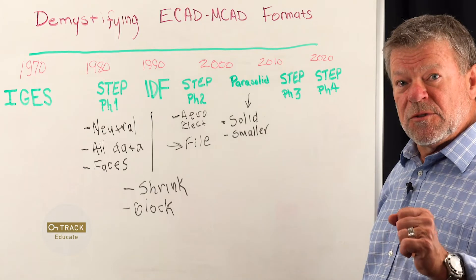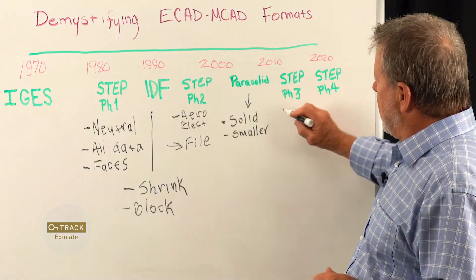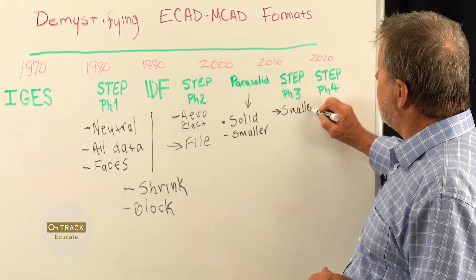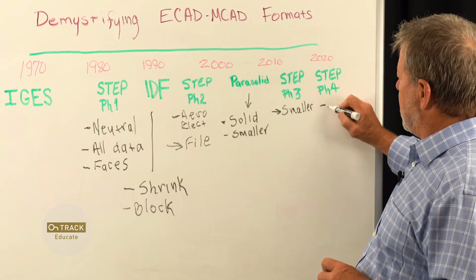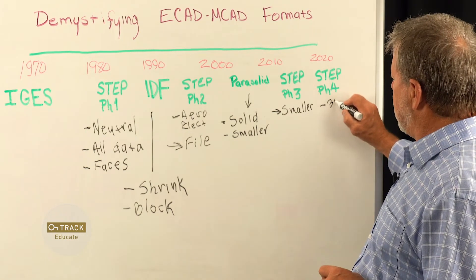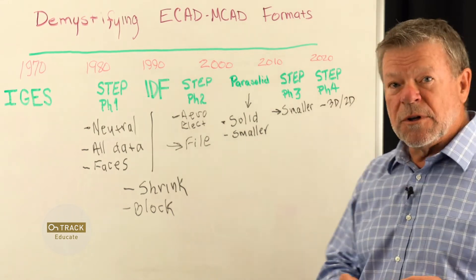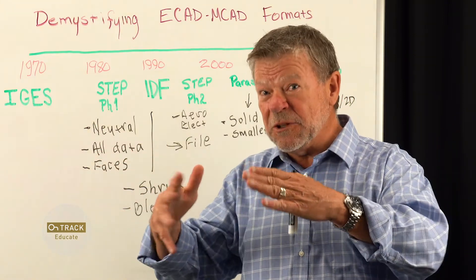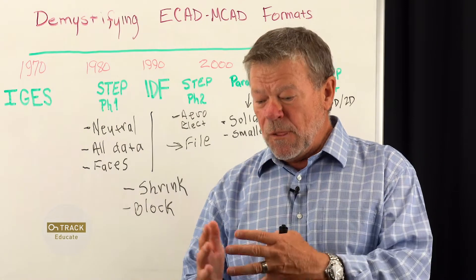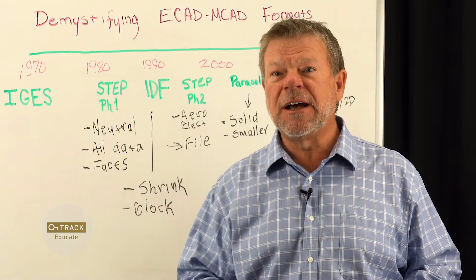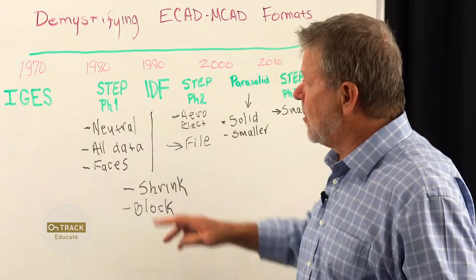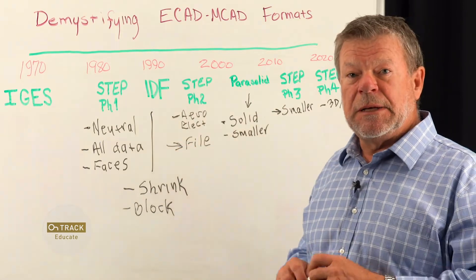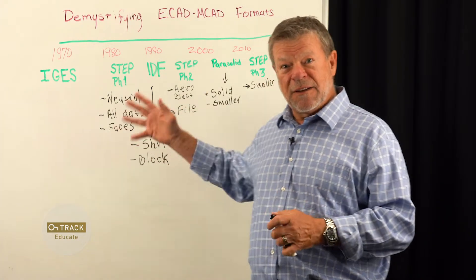In the last few years, STEP has been updated twice. Phase 3 was significantly aimed at making smaller file sizes. Phase 4 updated a number of the apps within, and significantly the 3D and 2D apps were optimized for both performance and file size. We're getting to the point where we can just about do this in real time and get excellent models. That's how we've evolved — what the formats do, what the weaknesses might be — and hopefully you now have a better understanding of that.